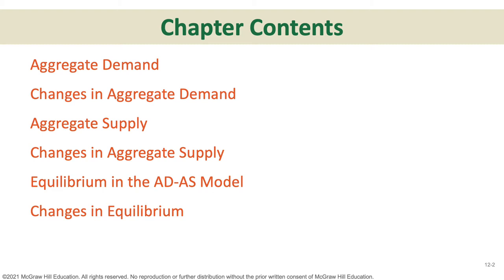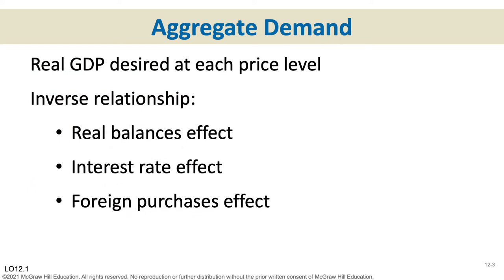Just like we did in Chapter 3 when studying supply and demand, we're going to look at the demand side — but now it's aggregate demand. Then we'll look at the supply side — but now aggregate supply. Then we'll put the two together to get our equilibrium price level and GDP.